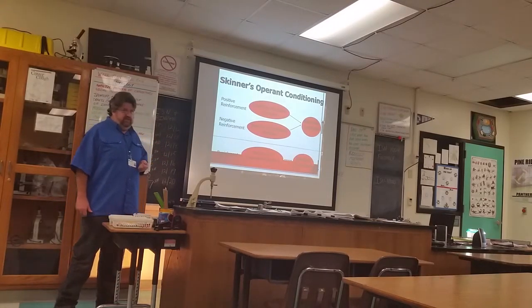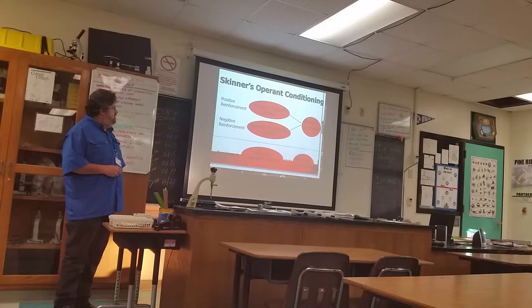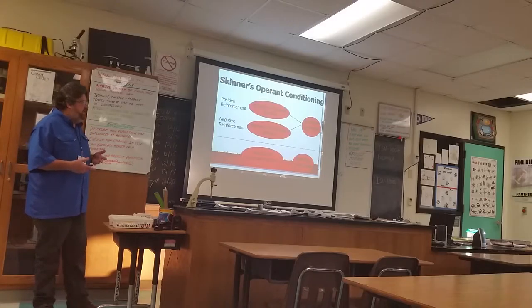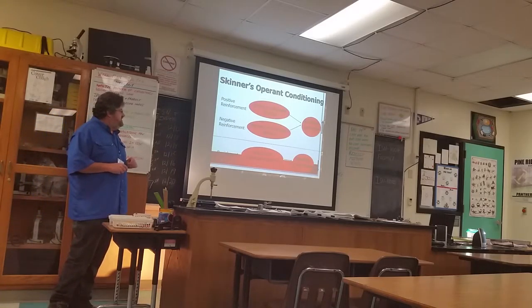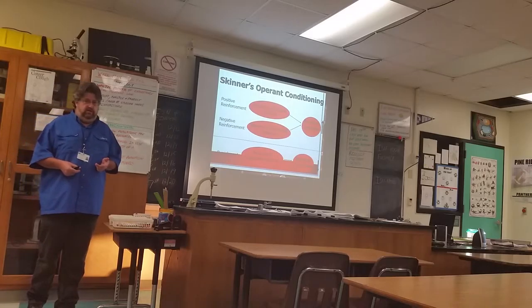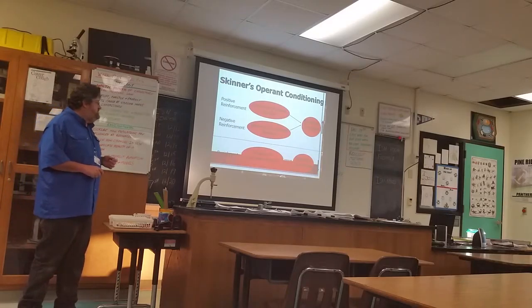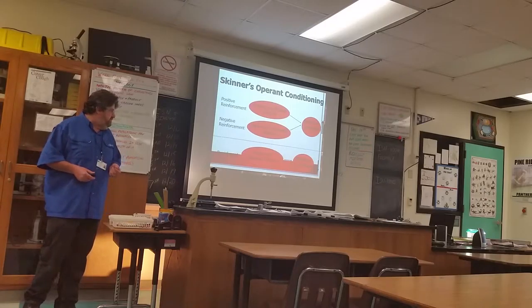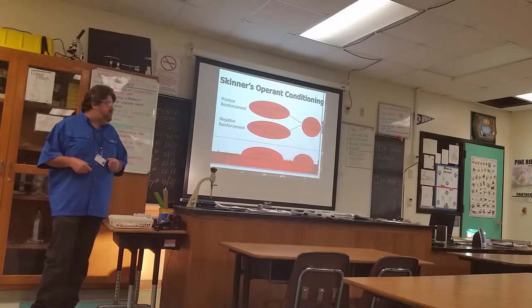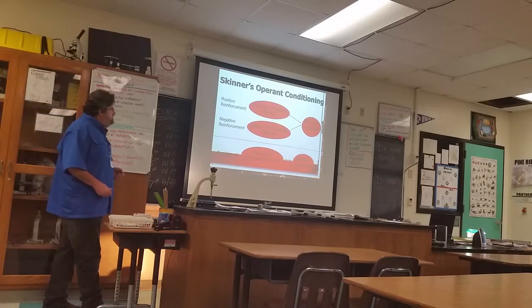There are three different phases of operant conditioning. First, positive reinforcement: the presence or offering of a pleasant stimulus. Second, negative reinforcement: the absence of an unpleasant stimulus. Both of these lead to an increase in a wanted behavior. Third, and least desirable, is punishment: the presence of an unpleasant stimulus with the goal of causing a behavior to decrease.